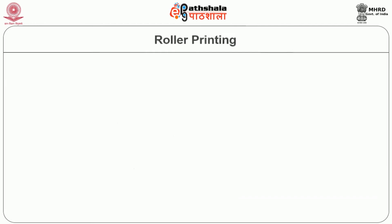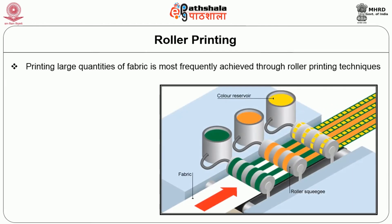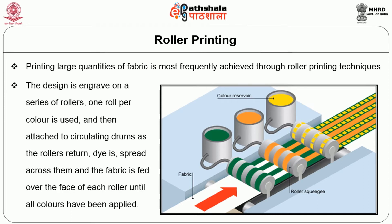Now we see roller printing. A large quantity of fabric is most frequently printed through roller printing techniques. The design is engraved on a series of rollers — one roller per color — which are attached to circulating drums. As the rollers rotate, dye is spread across them and the fabric is fed over the face of each roller until all colors have been applied.